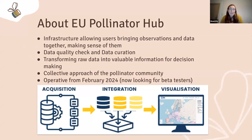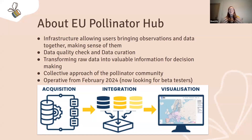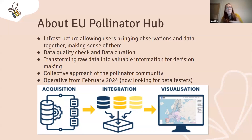The European Pollinator Hub is an infrastructure that allows different users to bring observations together. Each of us has a different way of collecting data, so what we try to do is standardize all this data so that it can be comparable. Not all observations are taken with the same quality, so we also do a quality check and data curation so that the data can be reused afterwards.